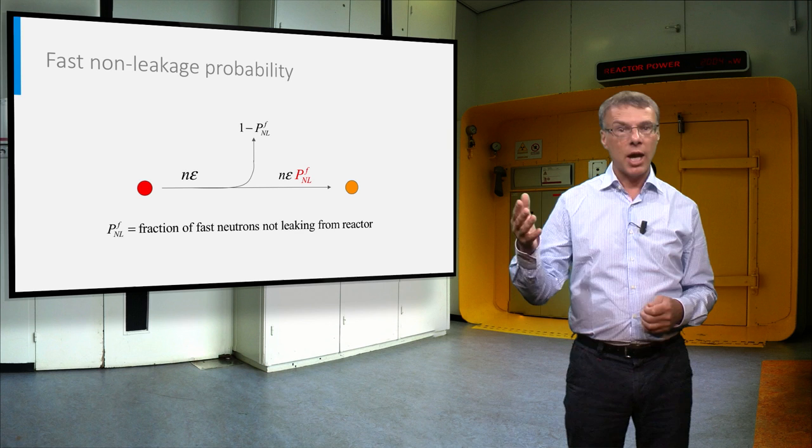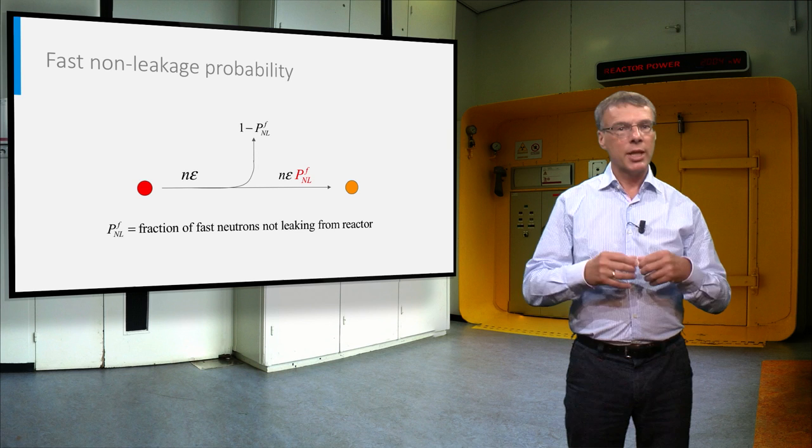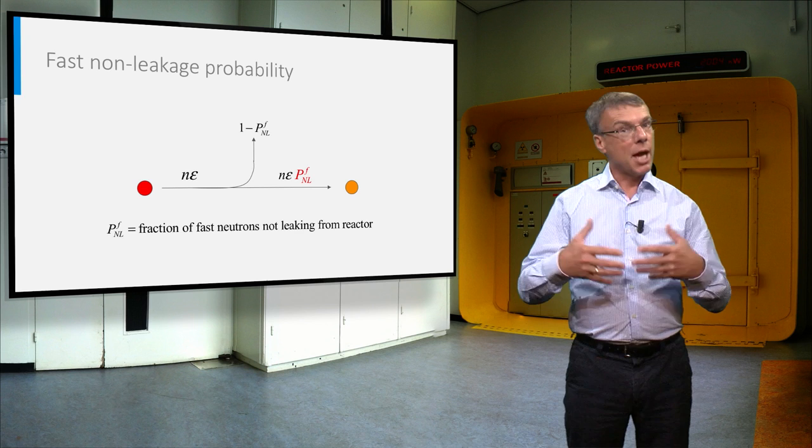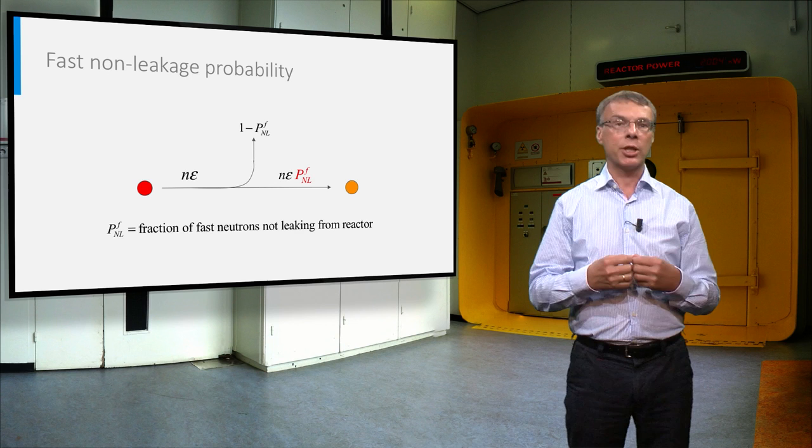When the neutrons still have a high energy, they can escape from the reactor core. The fraction of neutrons that survives leakage is called the non-leakage probability. And because we speak here about fast neutrons, this fraction is called the fast non-leakage probability.